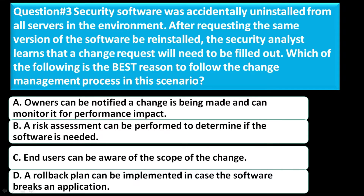Question number three: The security software was accidentally uninstalled from all servers in the environment. After requesting the same version of the software be reinstalled, the security analyst learns that a change request will need to be filled out. Which of the following is the best reason to follow the change management process in this scenario? Option A: owners can be notified a change is being made and can monitor it for performance impact. Option B: a risk assessment can be performed to determine if the software is needed. Option C: end users can be aware of the scope of the change. Option D: a rollback plan can be implemented in case the software breaks applications.